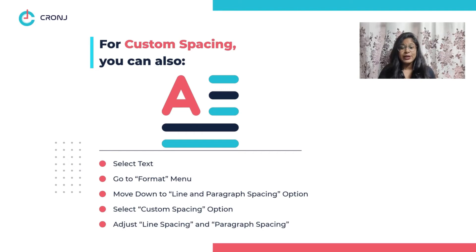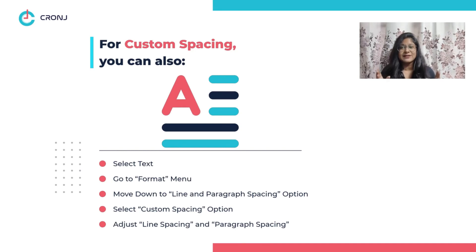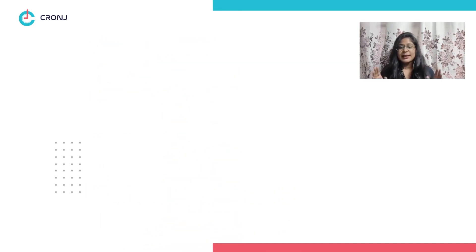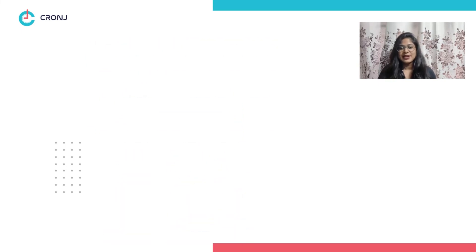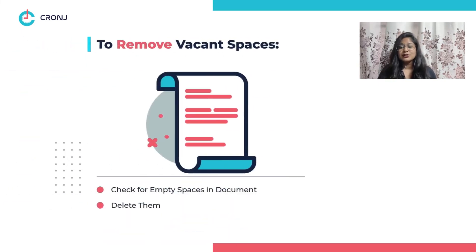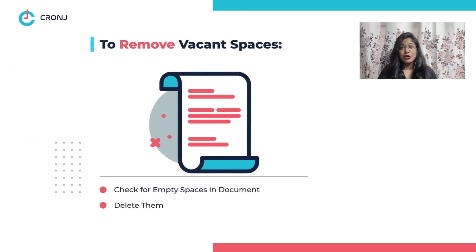Or, after selecting the entire text, you can go to the Format menu in the title bar and go to the Line and Paragraph Spacing option where you will find the Custom Spacing option as well. Adjust the line spacing as well as the before and after paragraph spacing.